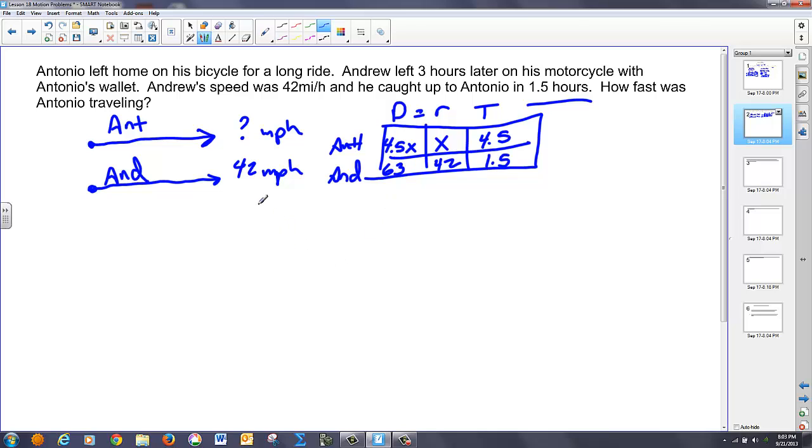We want to know how fast Antonio was traveling. So, how fast was he riding his bike. And as you can see in the picture, they leave from the same place. And then when they catch up to each other, their distances are the same. So, what I can do in this case now is set Antonio's distance equal to Andrew's distance. So, in that case, 4.5X equaling 63. I divide both sides by 4.5. If I take 63 divided by 4.5, I get 14.